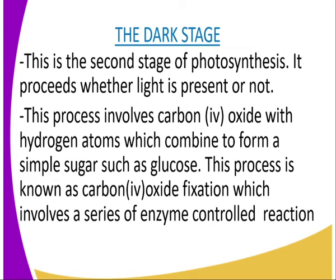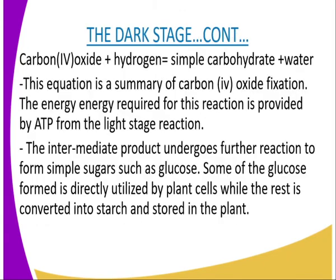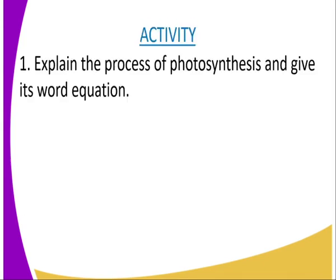The energy required for this reaction is provided by the ATP from the light stage. The ATP from the light stage goes to the dark stage. The intermediate product, a simple sugar, undergoes further reactions to form simple sugars such as glucose. Some of the glucose formed is directly utilized by the plant cells, while the rest is converted to starch and stored in the plant. In addition to glucose, fatty acids and amino acids are also formed in the dark stage of photosynthesis.